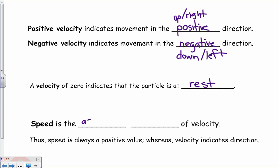Speed is the absolute value of velocity. So speed will not tell us the direction. It will just tell us the rate of change.